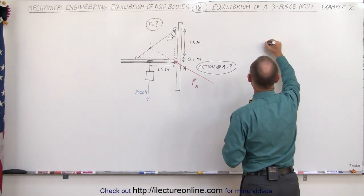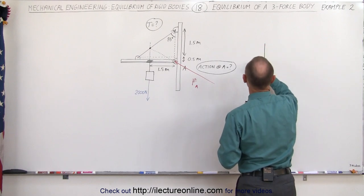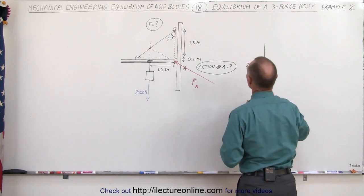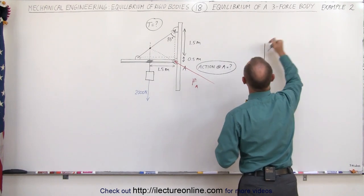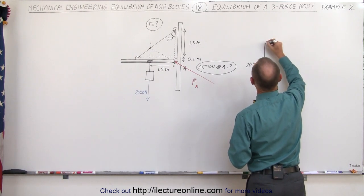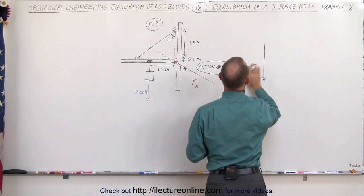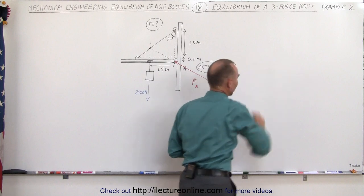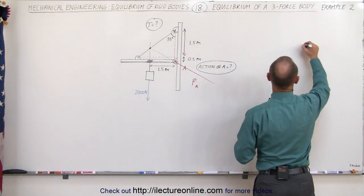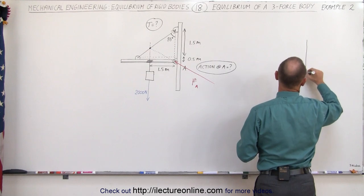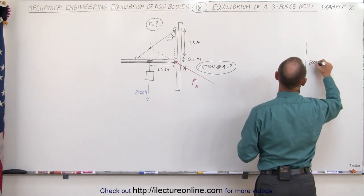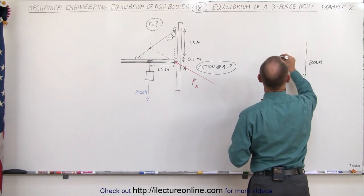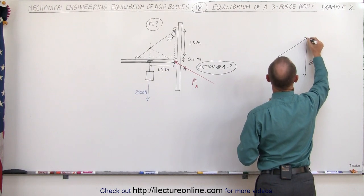I have the 2,000 newton weight in this direction — so this is the 2,000 newtons. Let me redraw this and put the 2,000 newtons a little further out. So there's the 2,000 newtons. Then I have the tension, which will be in this direction — so there's the tension.